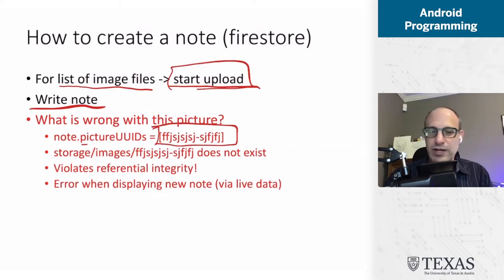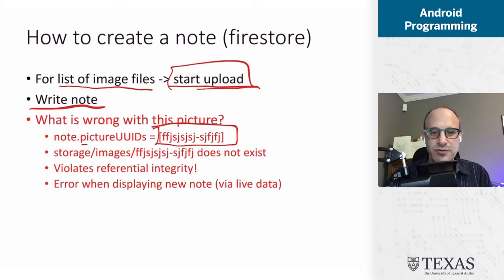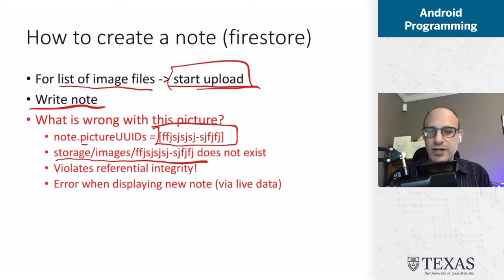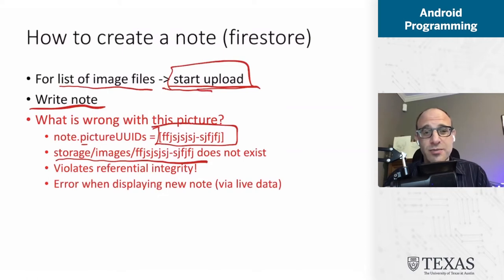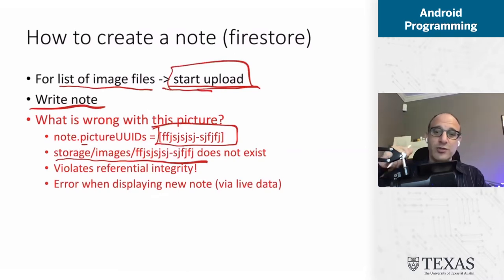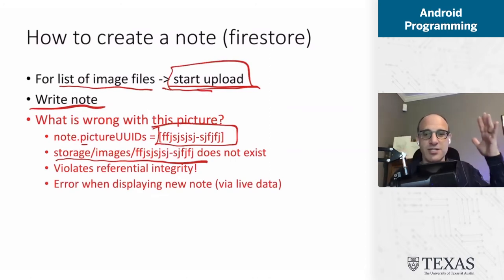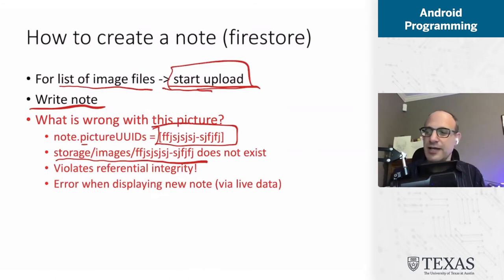What's the problem with this? The problem is that I might have started the upload, but the upload might not have completed. So my note is going to have a list of names corresponding to the cloud files — these randomly generated file names. My note refers to this randomly generated file name, but in the cloud database, this file name does not exist yet. Because I've started the upload — it will exist shortly, but it doesn't exist now. So I upload the image and then store the note; the note races ahead because it's just some text, while the image is a couple of megabytes. I write the note and then I have violated referential integrity.